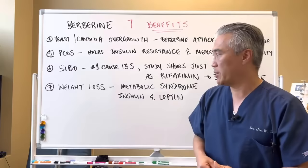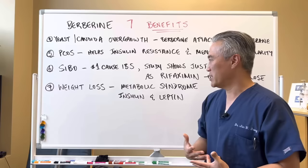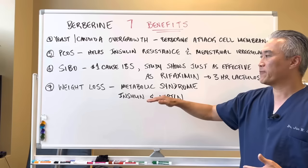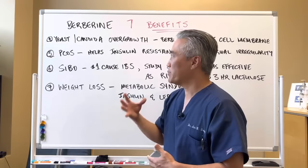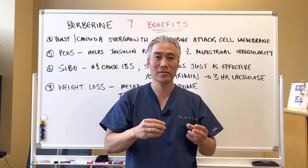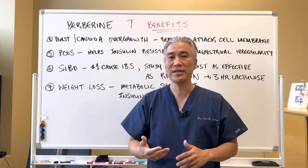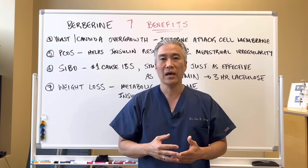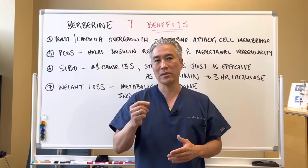Number seven: weight loss — great for metabolic syndrome. Women in their 40s with abdominal weight gain, insulin resistance, and high cholesterol and triglycerides can benefit. Berberine helps manage insulin resistance and leptin — the hormone that makes you feel full and satisfied. Do not stop medications or substitute supplements without consulting your physician. Berberine has antiviral and anti-parasitic effects as well, covered in a three-part series addressing dosage, timing, and absorption.